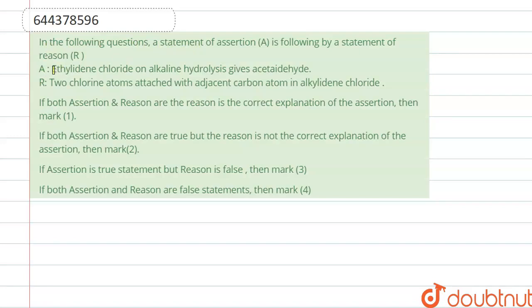Reason and assertion are given. Assertion says that ethylidene chloride on alkaline hydrolysis gives acetaldehyde, and reason says that two chlorine atoms are attached with adjacent carbon atom in alkylidene chloride.